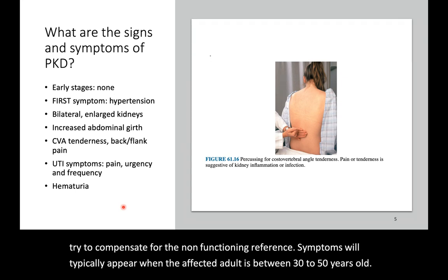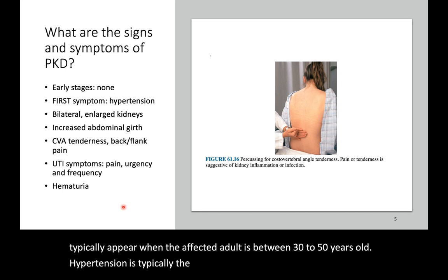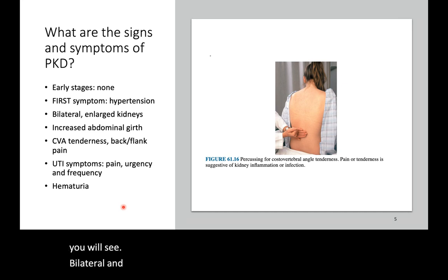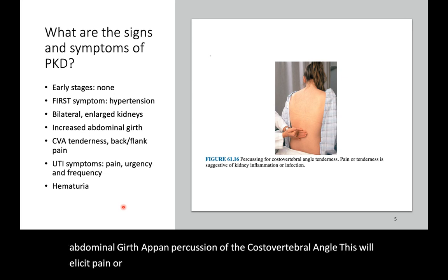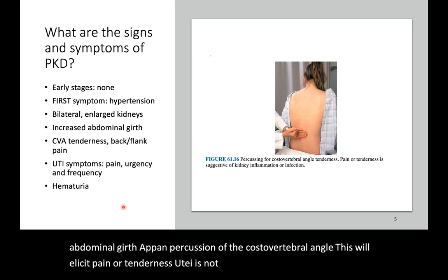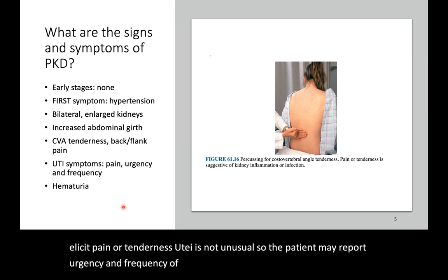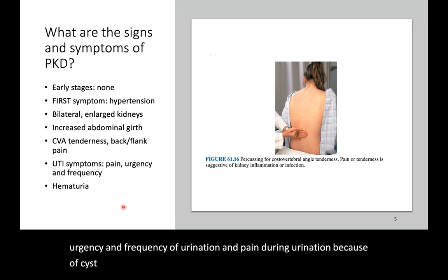Hypertension is typically the first symptom. On imaging studies, you will see bilateral and large kidneys. Upon inspection, you will see increased abdominal girth. Upon percussion of the costo-vertebral angle, this will elicit pain or tenderness. UTI is not unusual, so the patient may report urgency and frequency of urination and pain during urination. Because of cyst rupture, there might be blood in the urine.